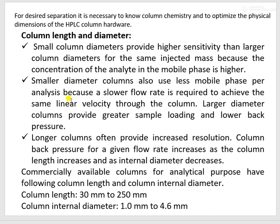Large columns provide greater sample loading and lower back pressure. The stationary phase contained within a large diameter column will be more compared to a small diameter column, hence you can load more sample to a large diameter column. There will also be less back pressure with a large diameter column. Coming to column length — longer columns often provide increased resolution. Column back pressure for a given flow rate increases as column length increases and internal diameter decreases.